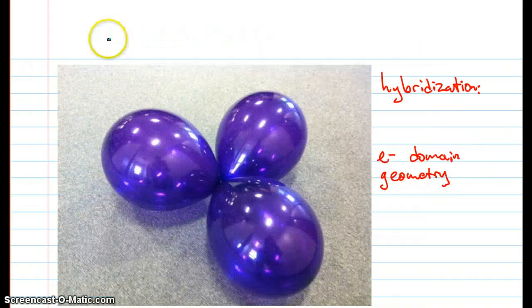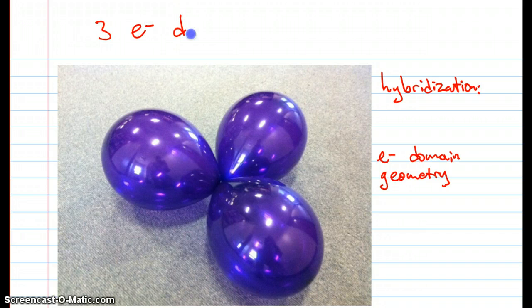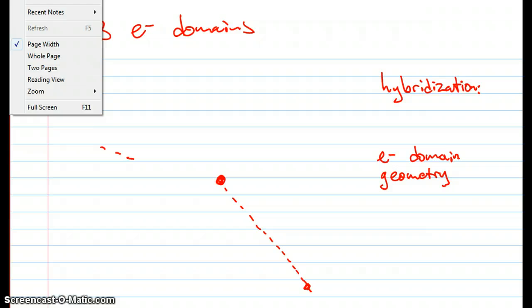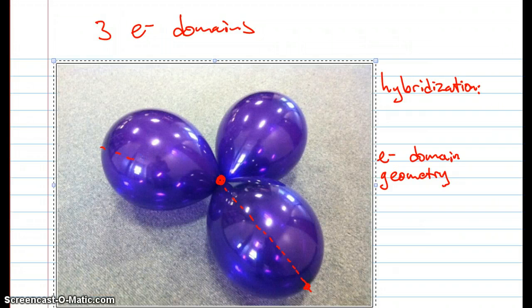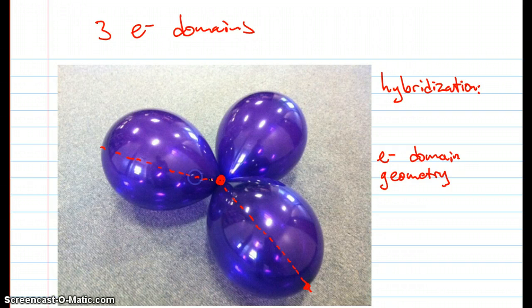When you have three electron domains, they orient so that they are pointing towards the corners of an equilateral triangle. So here is our central atom. Here's one corner. There's another corner. And there's the third corner. So you could inscribe an equilateral triangle here.